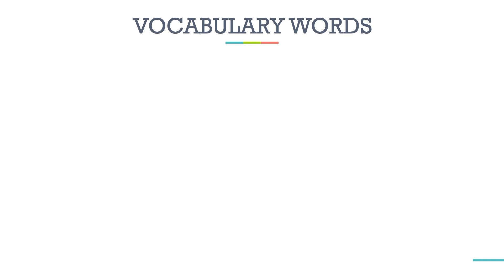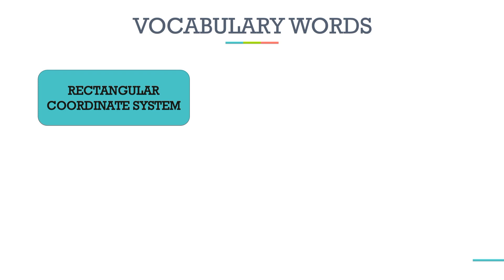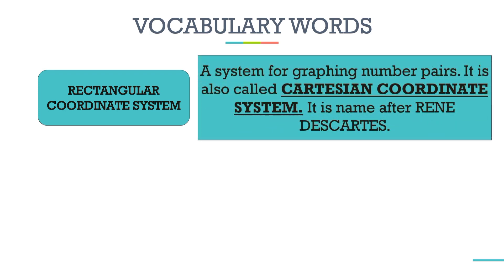We have here vocabulary words that we may encounter during our discussion on Rectangular Coordinate System. The first one: Rectangular Coordinate System. When we say Rectangular Coordinate System, it is a system for graphing number pairs. It is also called Cartesian Coordinate System, named after Rene Descartes. Rene Descartes is the founder of the Rectangular Coordinate System.